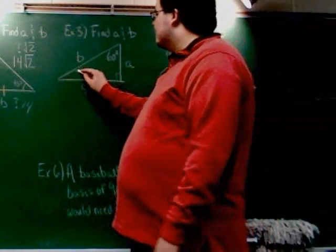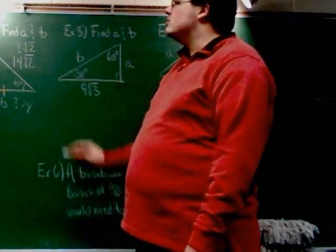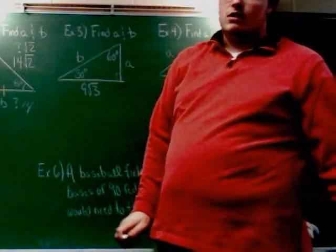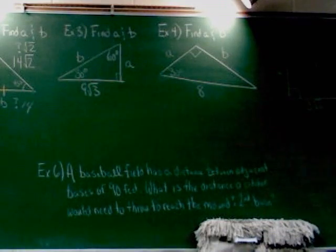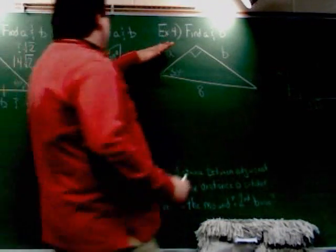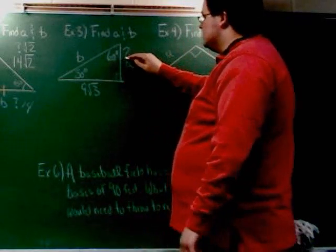So this one here is my 30 degree angle. I'm using the 30-60-90 rule. This is my 30-60-90 rule right here. Across from 30, we see is question mark. So I go to the 30 and go across from it, and I land on the A side.